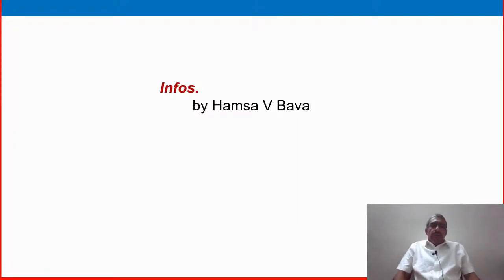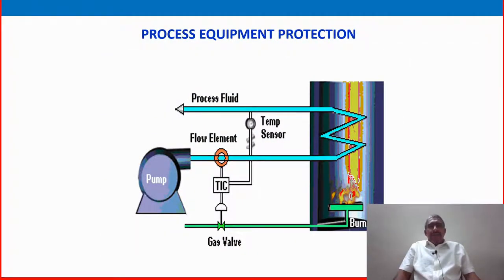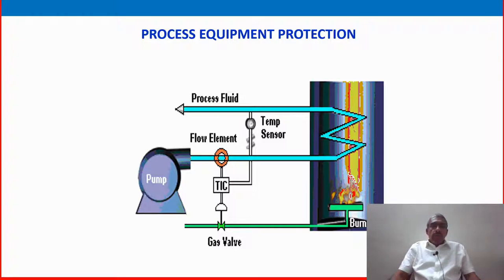Dear friends, welcome to Infos. Welcome to another video from the oil and gas training series. In this video, we are discussing about process equipment protection. You know that the hydrocarbon process industry or oil and gas process industry is highly hazardous, and we have to protect all equipment operation and plant operation in a safe and efficient manner. Process equipment protection is an important system installed in various types of oil and gas or chemical industry. Let us see how this process equipment protection system works.